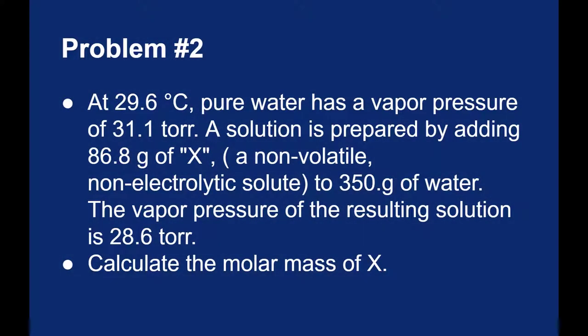Let's look at another problem using Raoult's Law. This time we're given the vapor pressure of pure water at a temperature of 29.6 degrees Celsius. We want to lower that vapor pressure to a new value. We are told the mass of solute that is added to a certain mass of water, and we want to find the molar mass of that solute. We're told the solute is not volatile, which means that we're talking about an ideal situation.